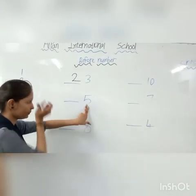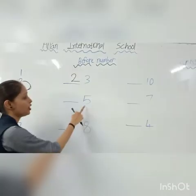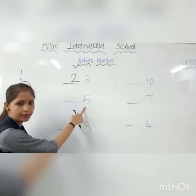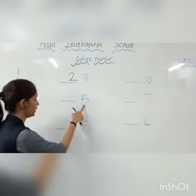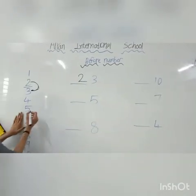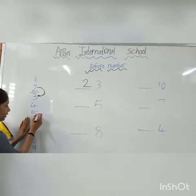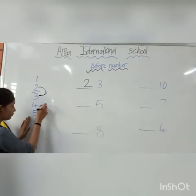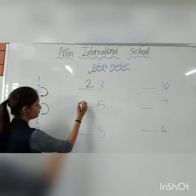The second number — this is 5. Where is 5? Here. What comes before 5? The answer is 4.